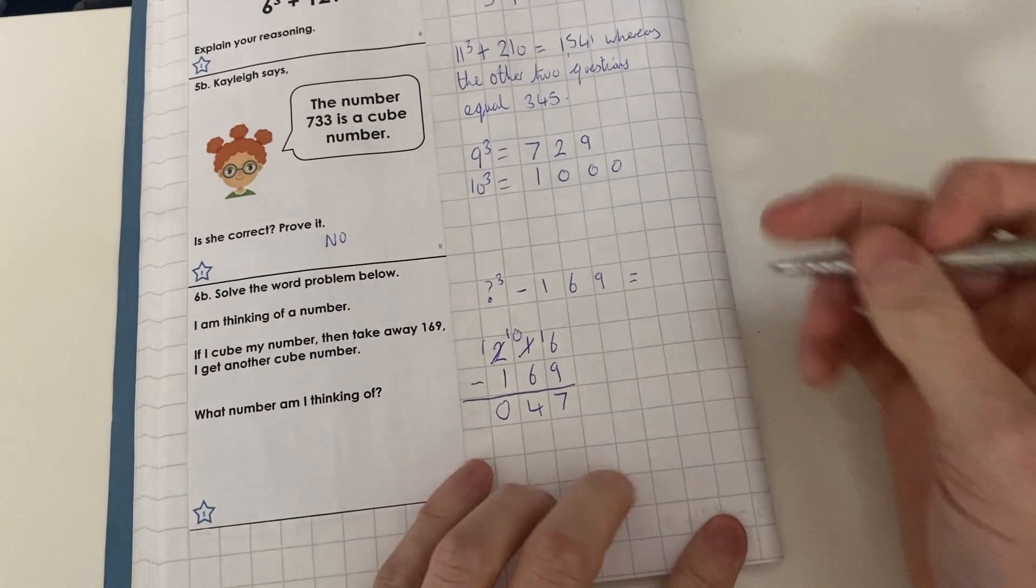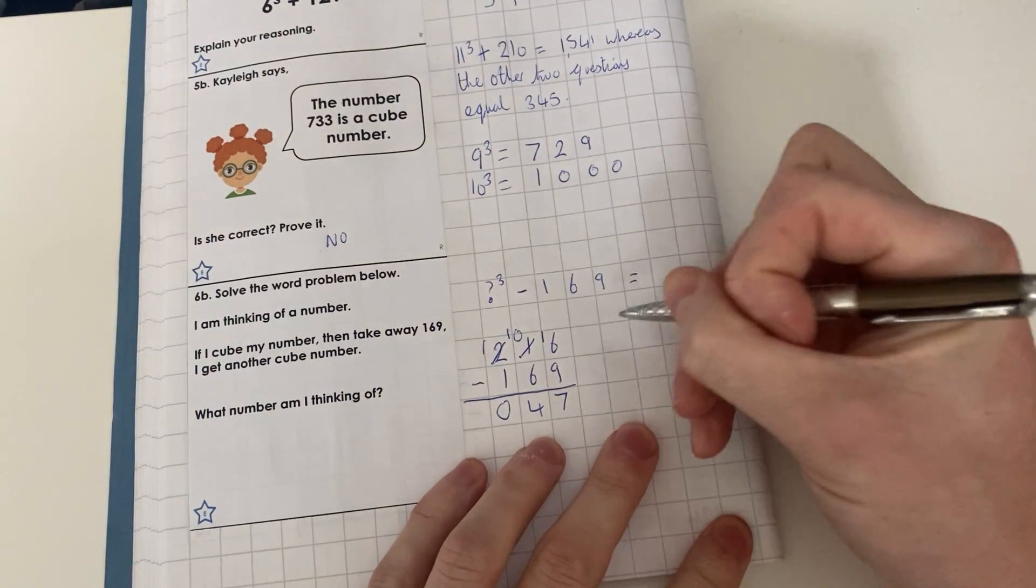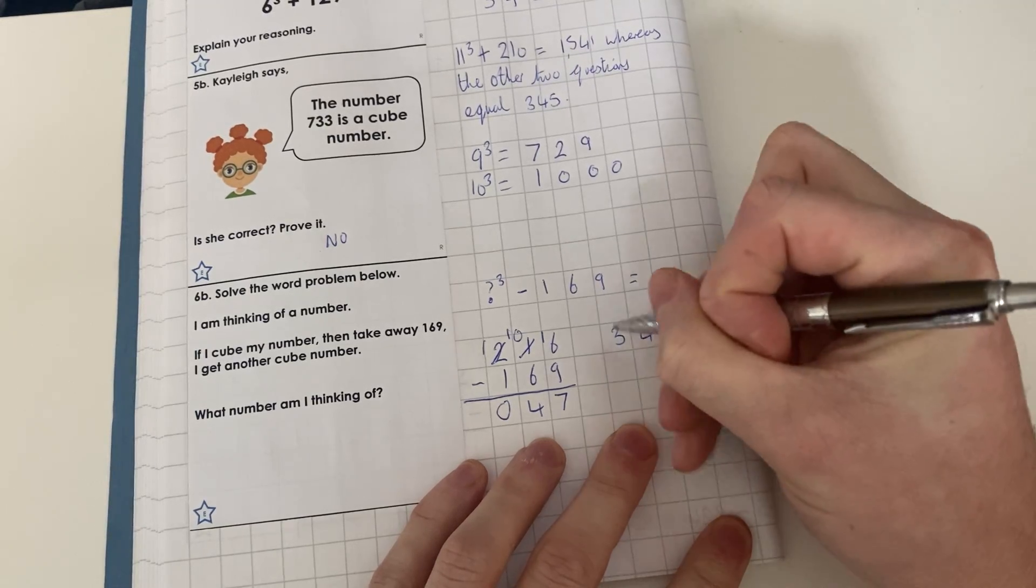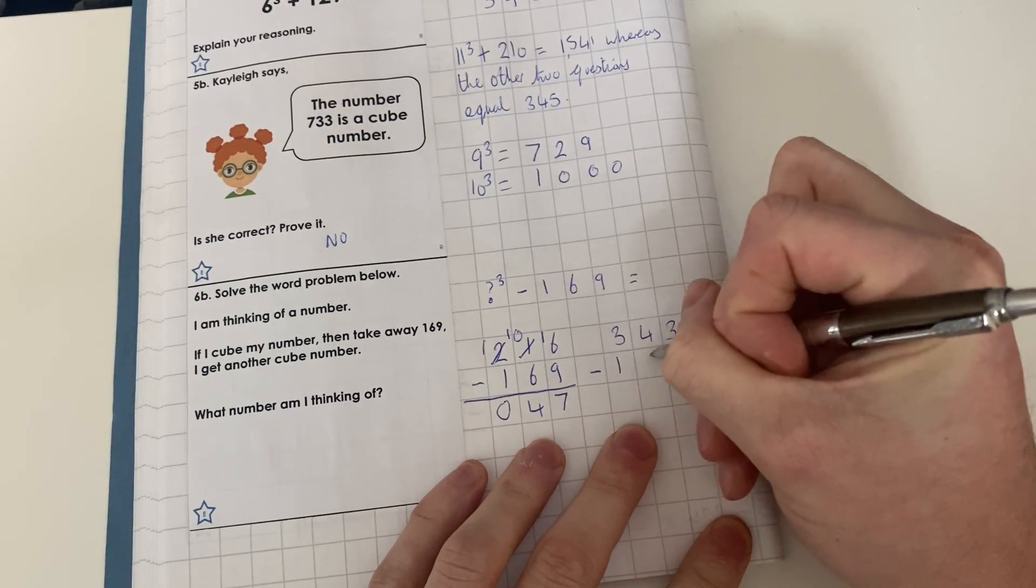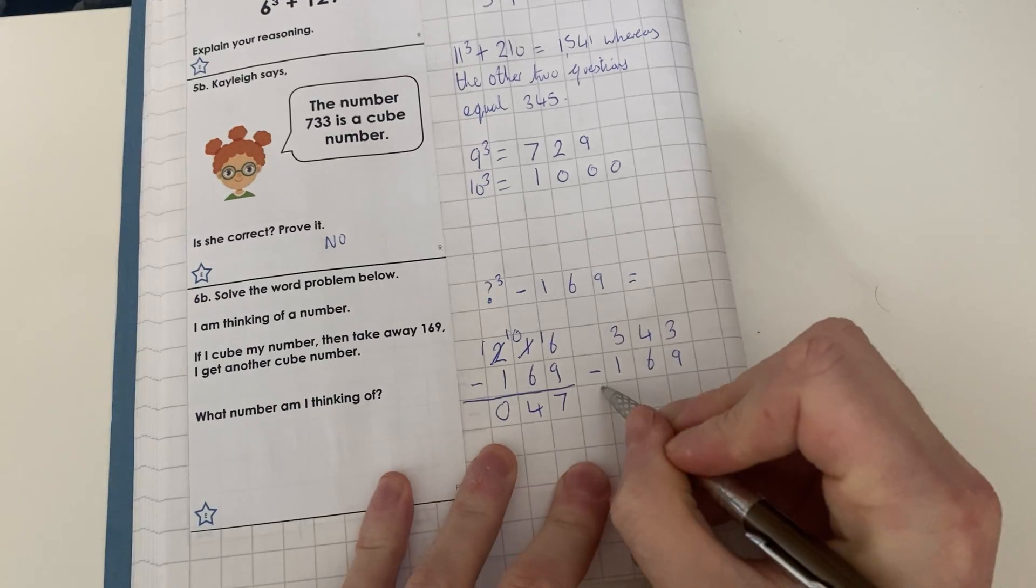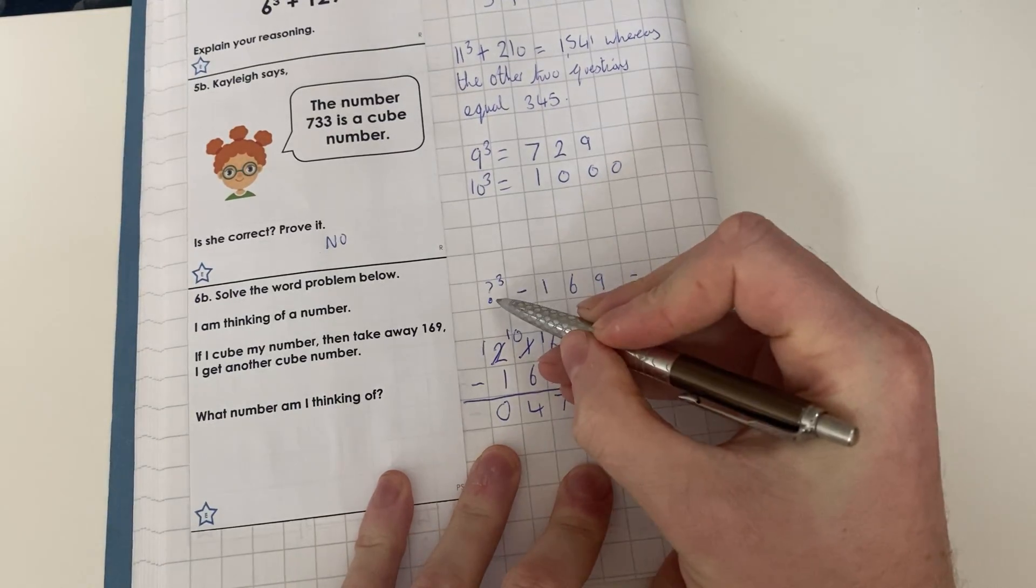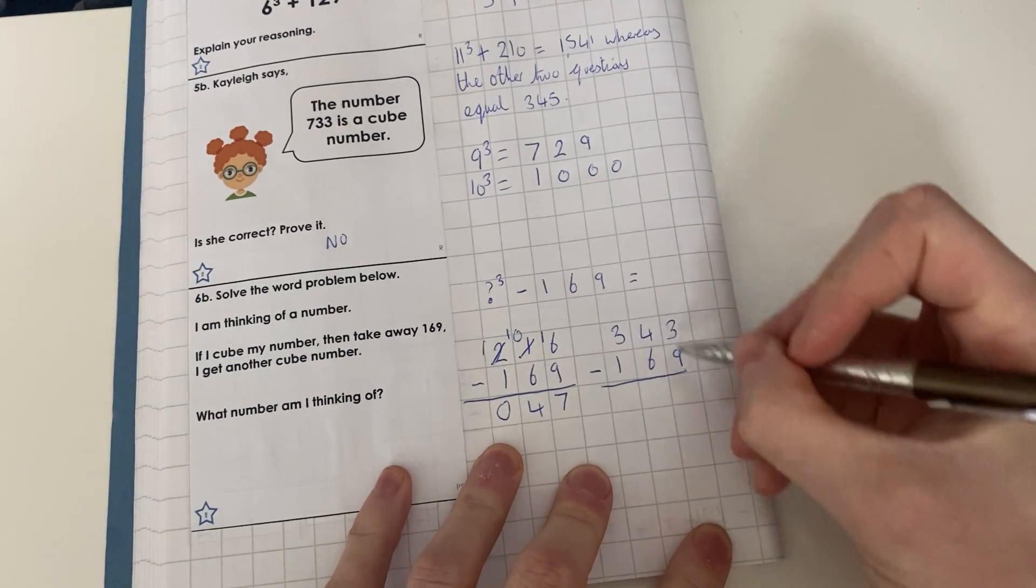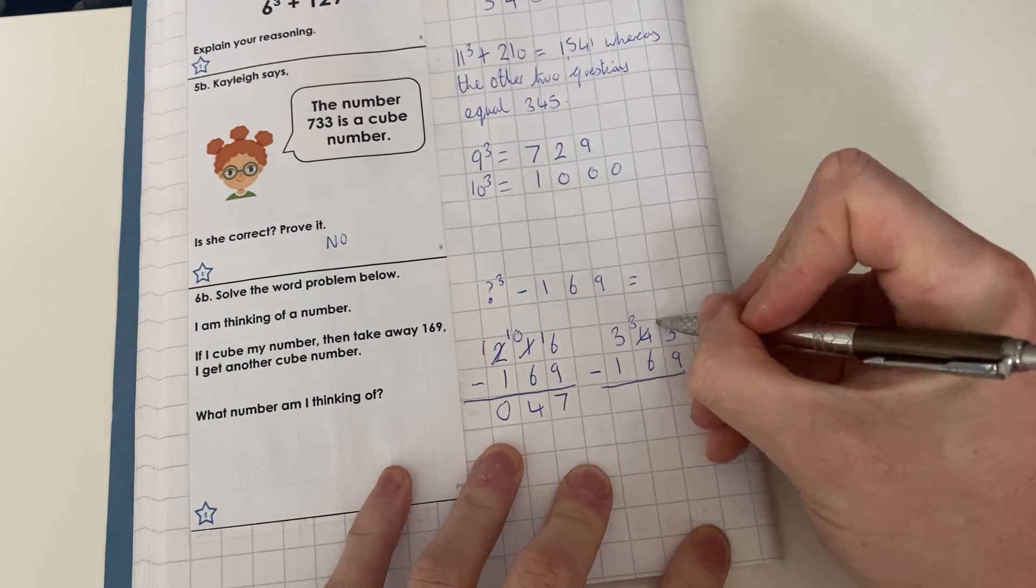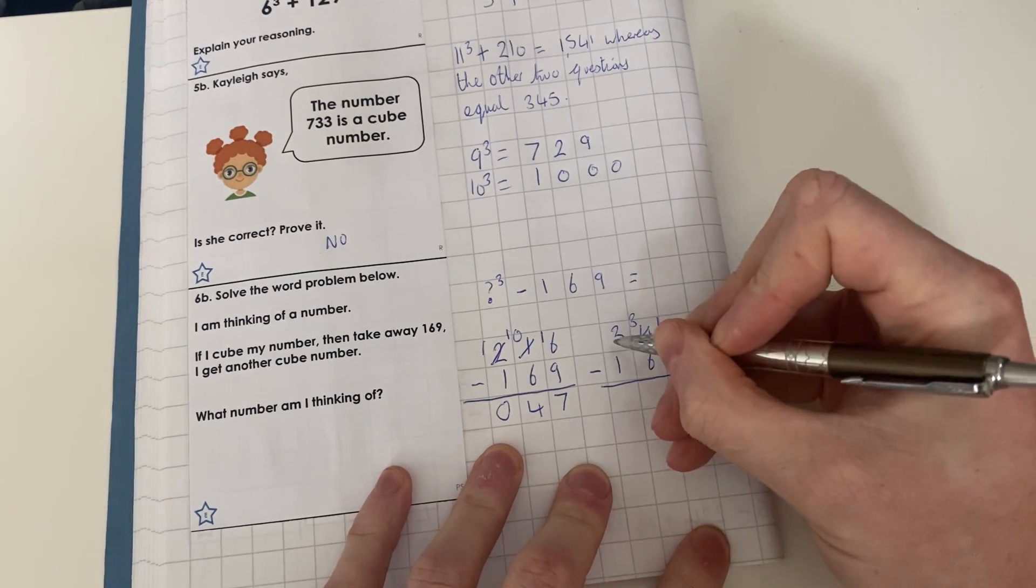We could try 7³ now, so 7³ is 343 - 169. So this is to see if 7 is that missing number. 3 - 9 we cannot do, 13 - 9 = 4, 3 - 6 we cannot do.